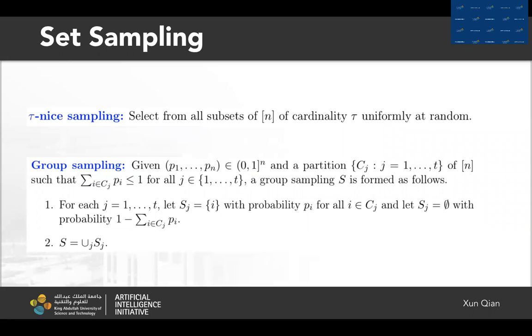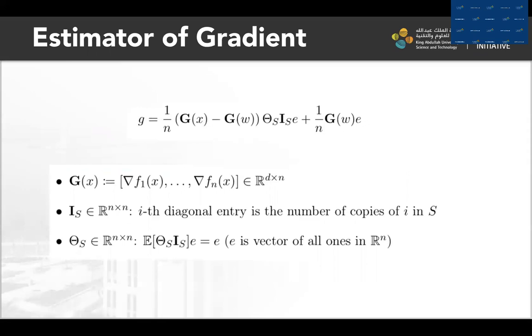Here are two examples of set sampling. The first one is tau nice sampling. It's a very nice sampling and it's uniform. We propose a new sampling called group sampling and it can be non-uniform.